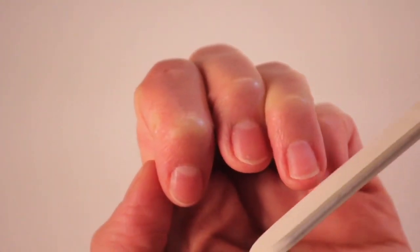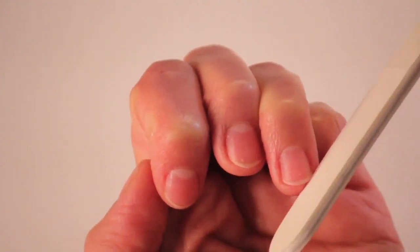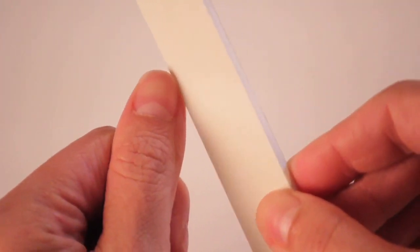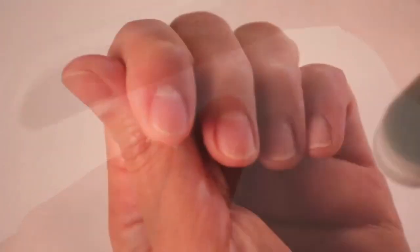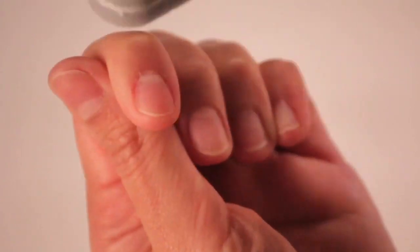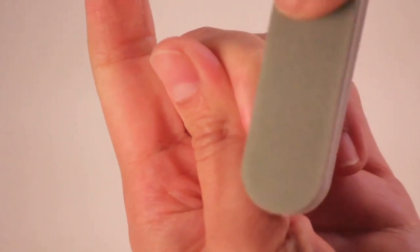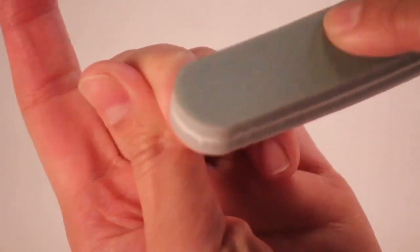Now it's time to remove the shine. You're going to grab your 180 buffer and you need to remove the shine from your natural nails so that it looks dull.